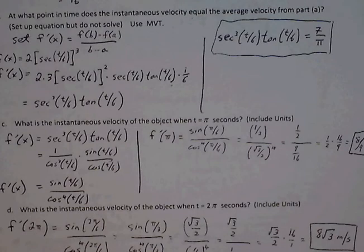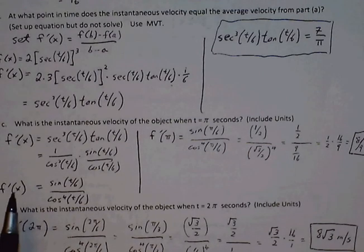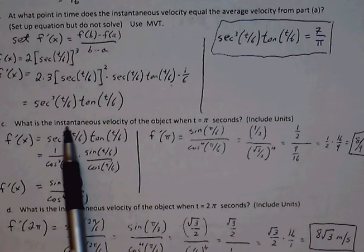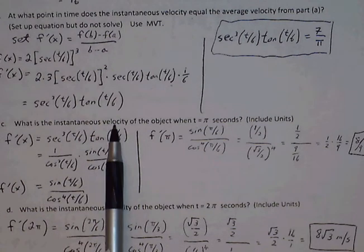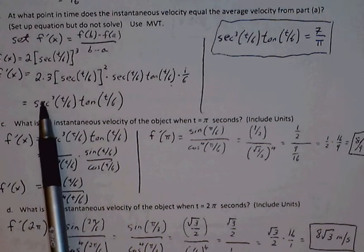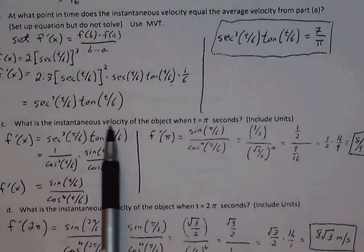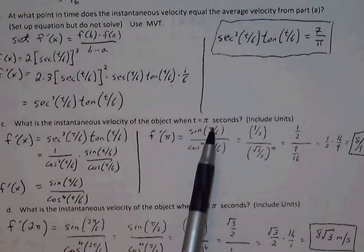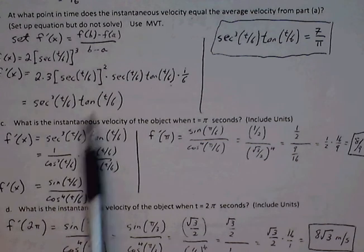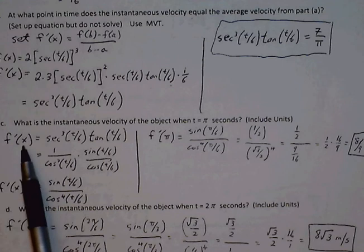Part C, what is instantaneous velocity of the object when t is pi seconds? So we have the velocity function, which we found after we apply the derivative, secant cubed t over 6, tangent t over 6. What is the instantaneous velocity? If we want to find the instantaneous velocity, we just plug pi in for t.